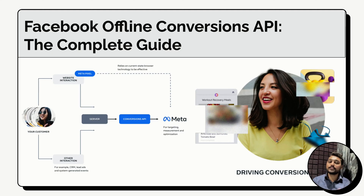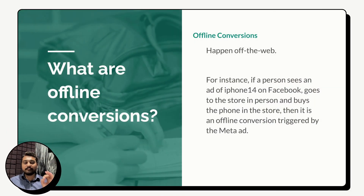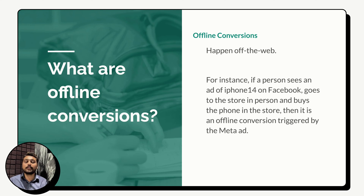This results in an incomplete customer journey, leading to reduced conversions and ad campaigns not trained with the right data, resulting in poor performance. To track all these offline conversions inside Meta Ads, Meta has launched the Facebook Offline Conversions API, also called the Meta Offline Conversions API. So what are offline conversions? Every purchase or transaction that happens in the real, physical world is called an offline conversion.